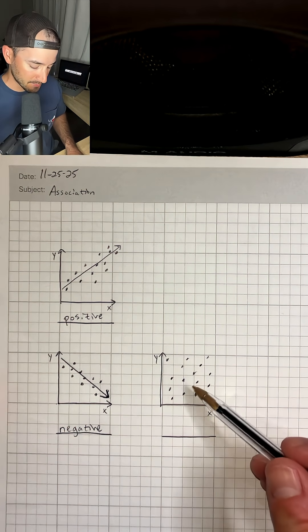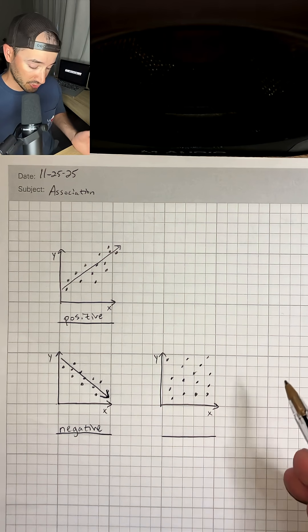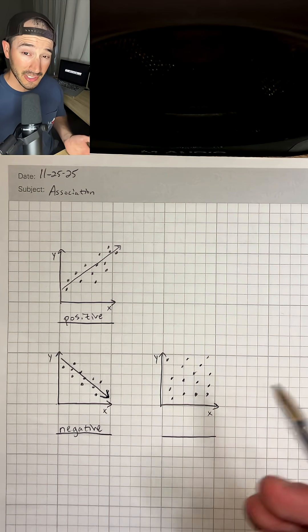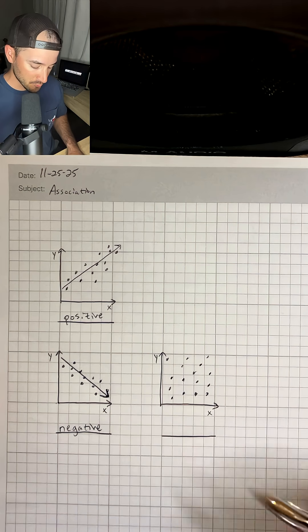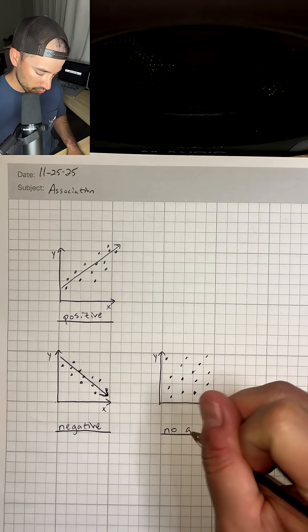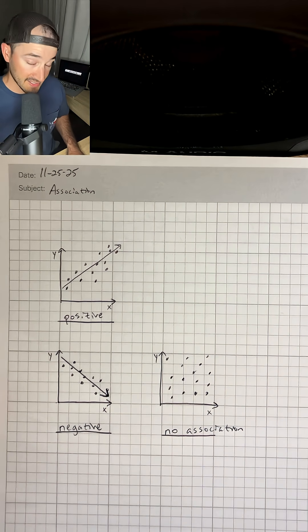And then this last example, we just have a lot of random points on here that don't really have a pattern. There's not really a line to look at. And so if there's no pattern like this, we're just going to say that that is no association and that's all you have to do.